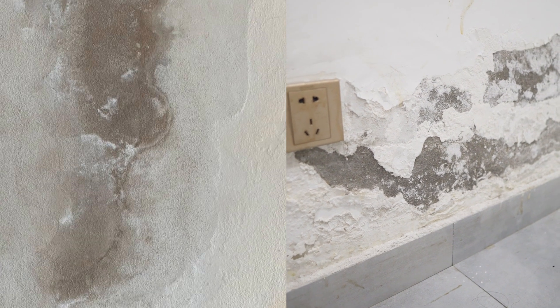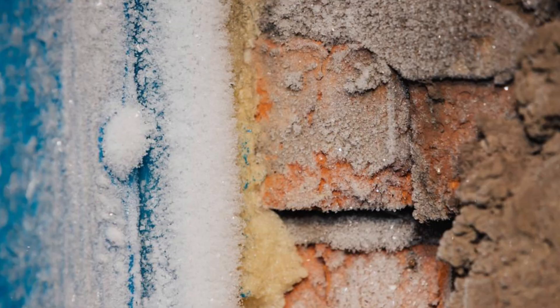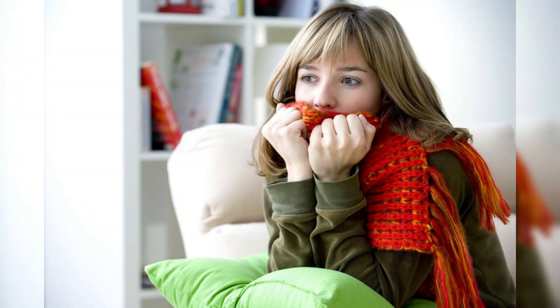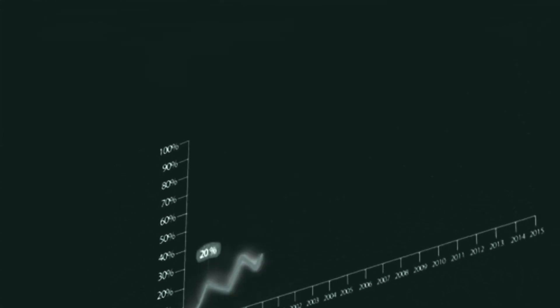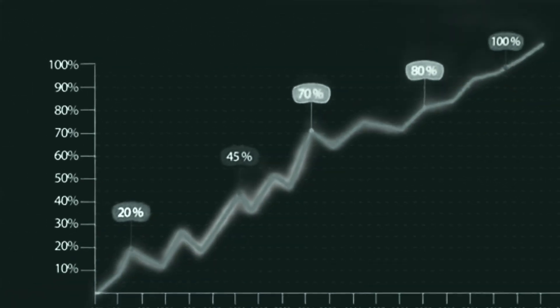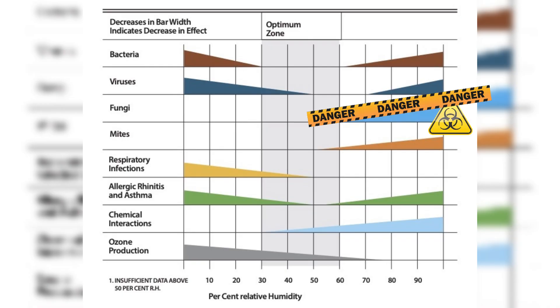There are two significant problems when this occurs. First, the physics: it takes energy to change state from liquid to gas — the same science behind how our bodies cool via sweat. The energy comes from the heat of the substrate, so the wall cools down as it evaporates the water. Second, that water from the wall has now become water vapor in the air, increasing the room's humidity. These elevated relative humidity levels, combined with cold walls caused by evaporation, create the conditions where mold thrives.